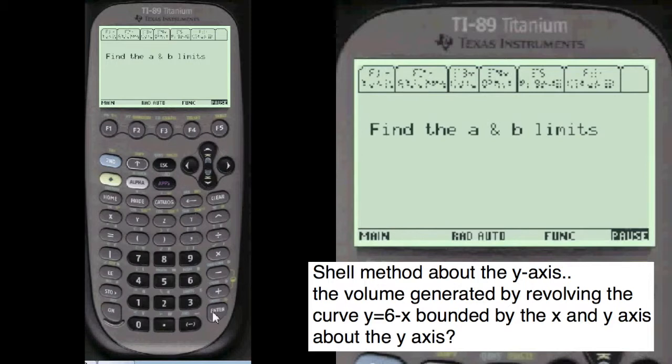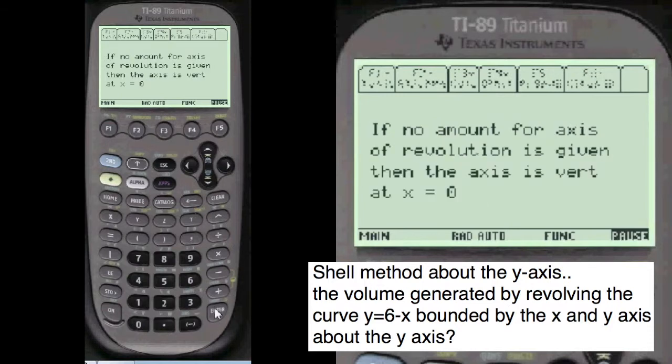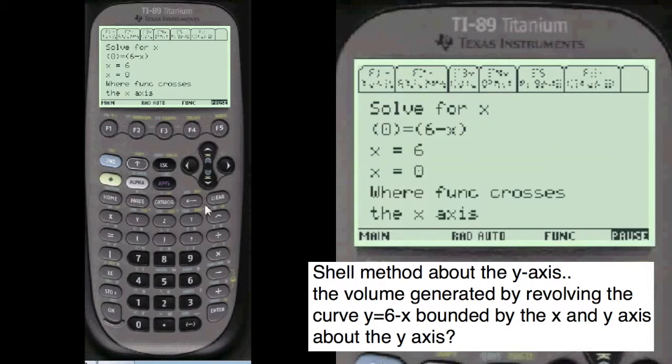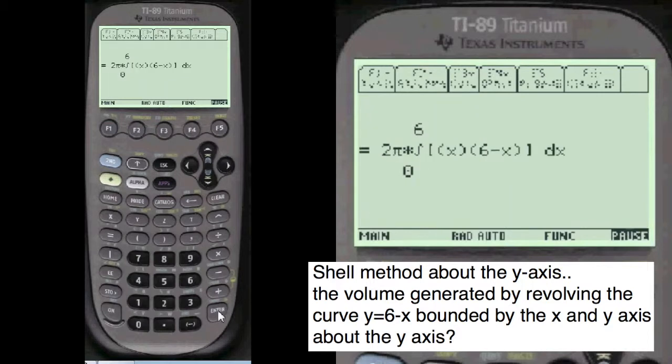And one of the tough things about shell is the confusion of the whole thing. But then we're going to find the a and b limits. You do that by, if nothing else is given for the x value, then x is equal to zero because you've got a vertical axis of revolution, and it's at the x equals zero point. So we set the equation equal to that. Zero equals 6 minus x. And we get the limits at six. This is where the function crosses the x-axis.